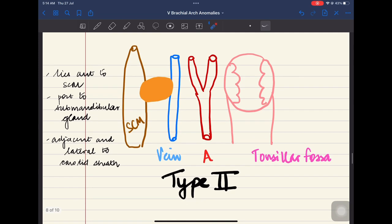Now coming on to the type 2 Bailey's classification. It lies anterior to sternocleidomastoid, posterior to submandibular gland and adjacent and lateral to the carotid sheath.